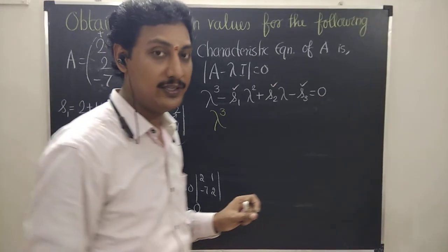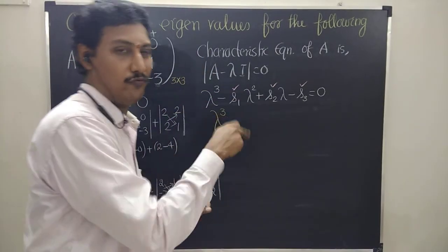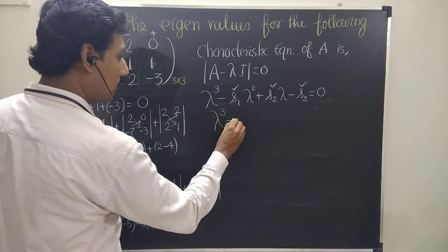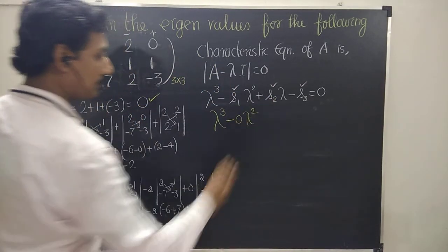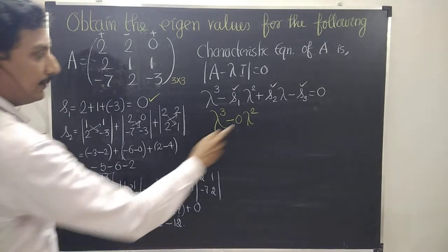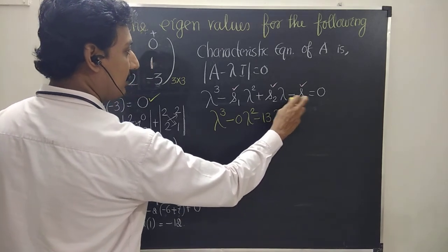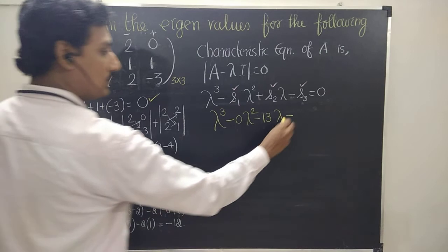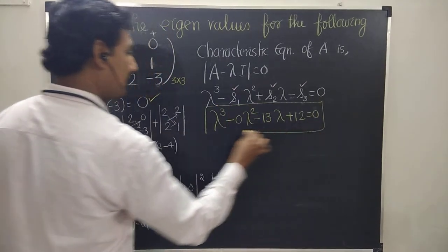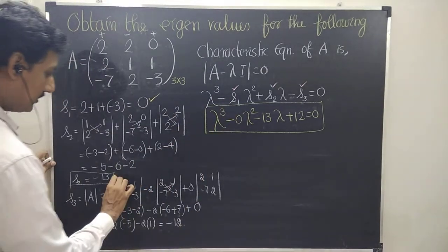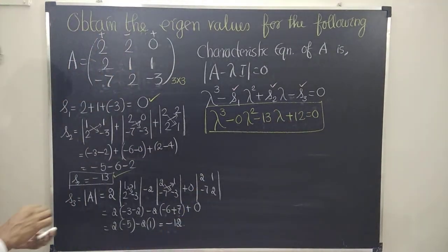So how to solve the cubic polynomial is very interesting. The characteristic polynomial is: lambda cubed minus 0 lambda squared plus (minus 13) lambda minus (minus 12) equals 0. That is: lambda cubed minus 13 lambda plus 12 equals 0. Once again: S1 is 0, S2 is minus 13, S3 is minus 12, so minus of minus gives plus 12. This is the cubic polynomial.